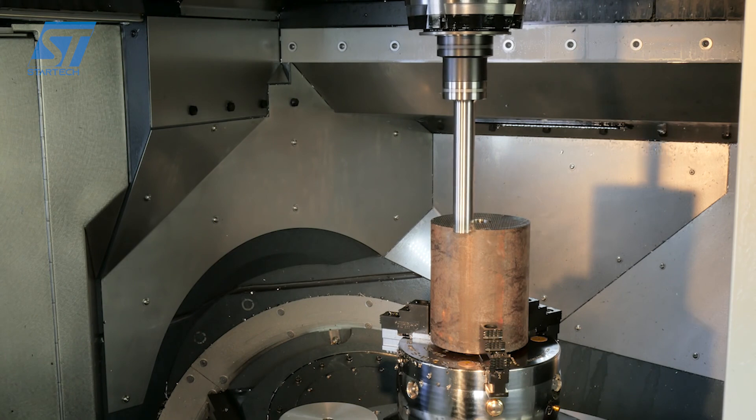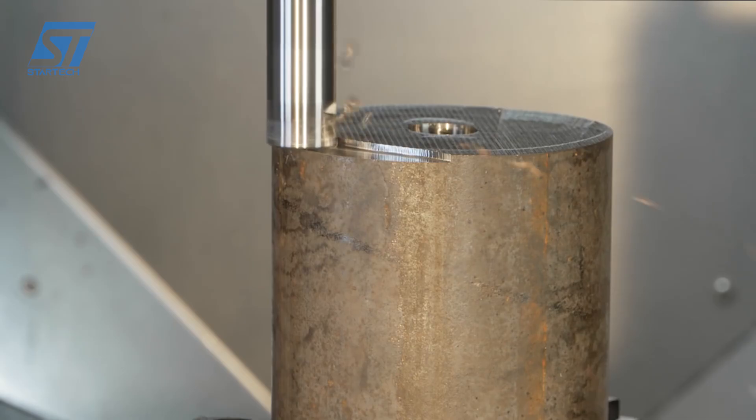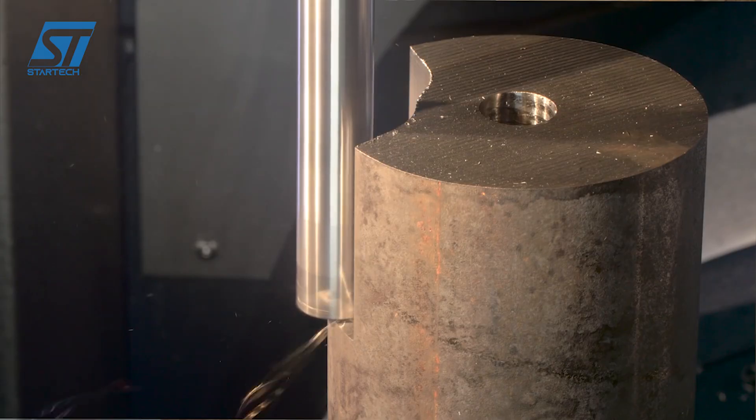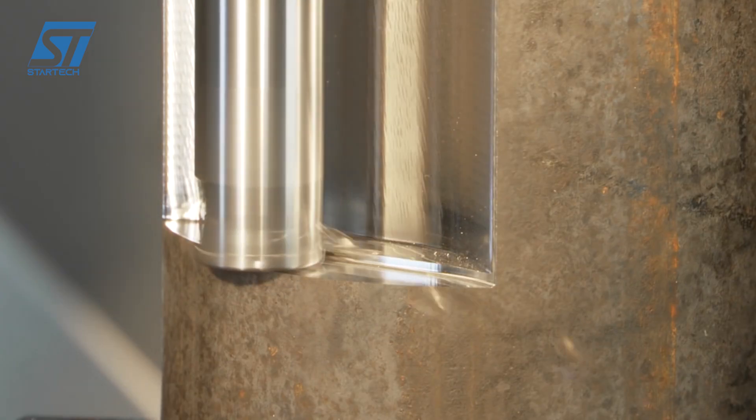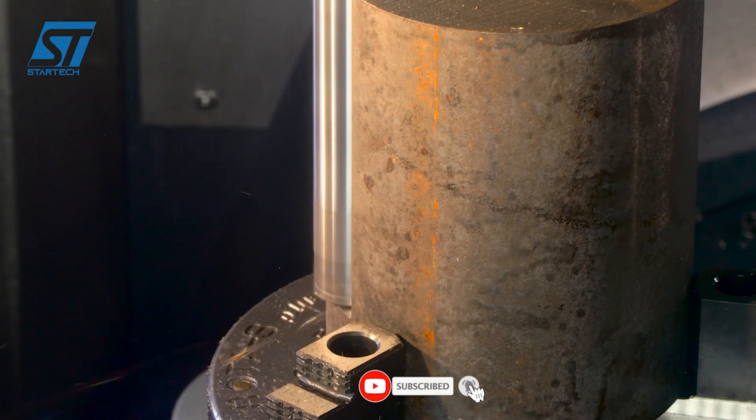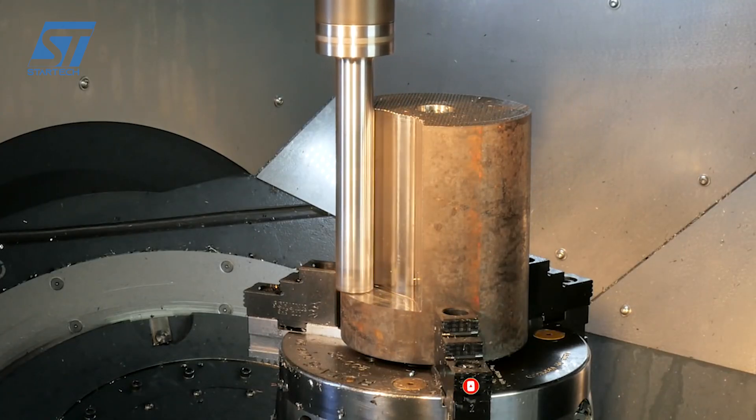The CoroMill 390 with Silent Tools technology is a cutting-edge milling solution designed to tackle challenging machining conditions, especially when dealing with long overhangs or difficult-to-machine materials. The CoroMill 390 is known for its versatility, capable of handling a wide range of applications, including shoulder milling, face milling, ramping, and helical interpolation.